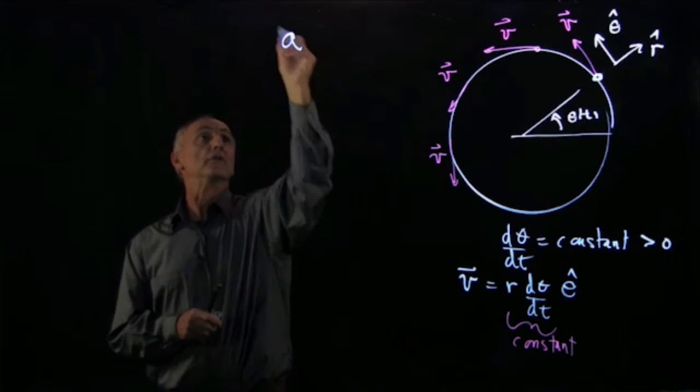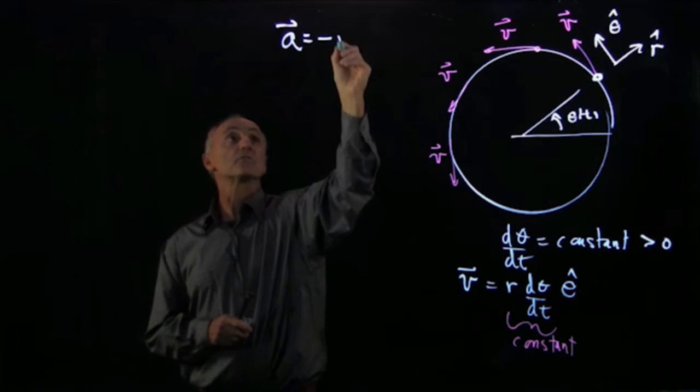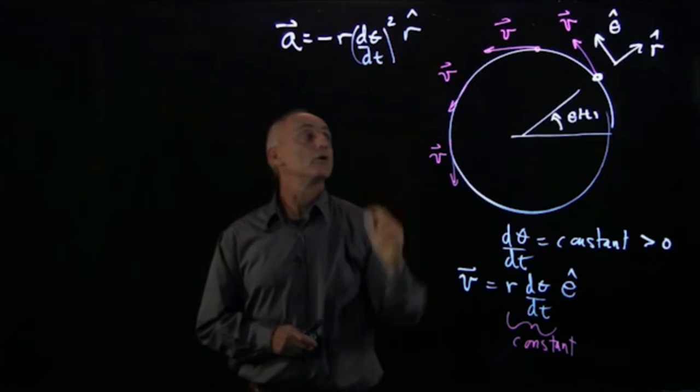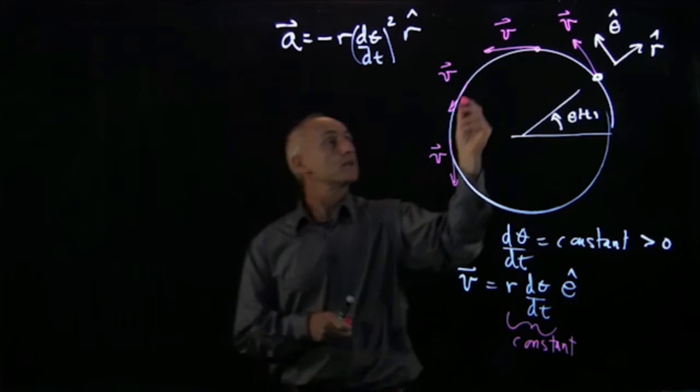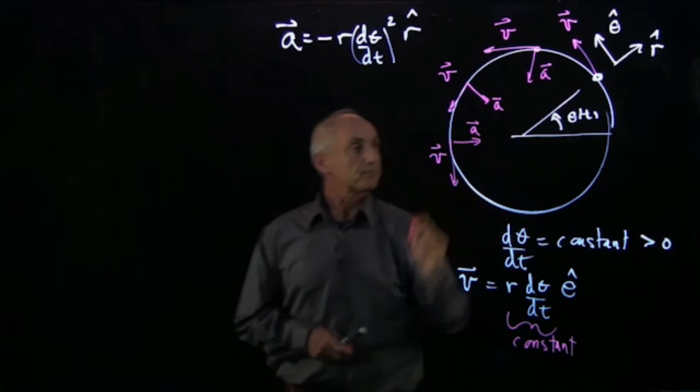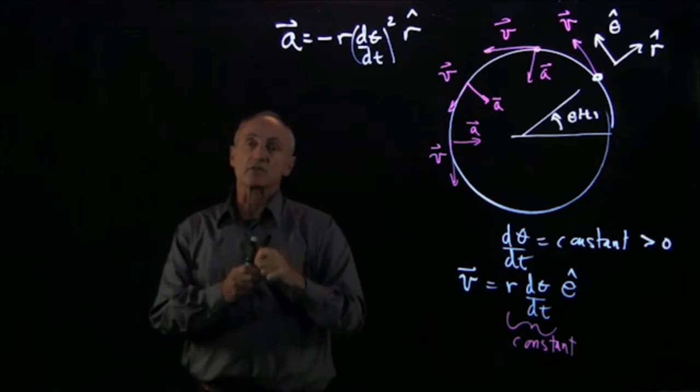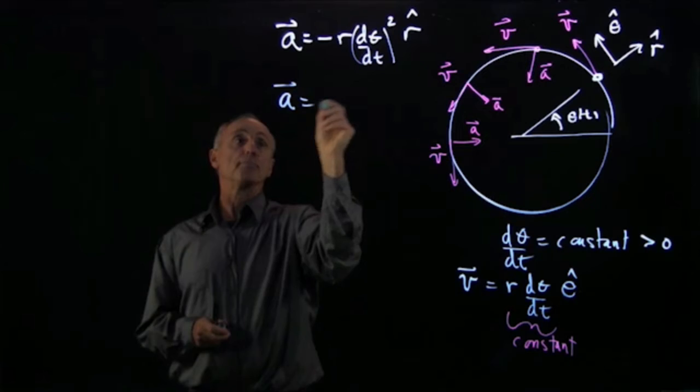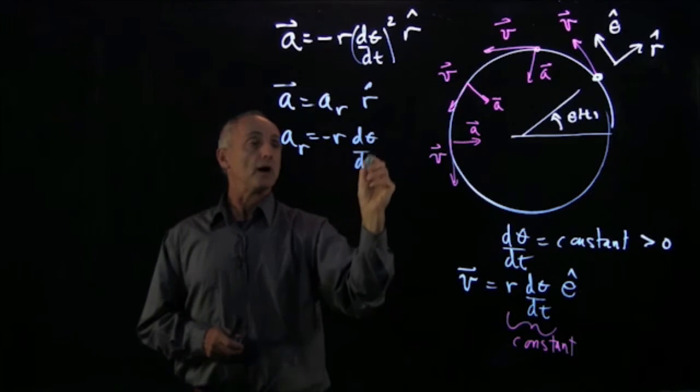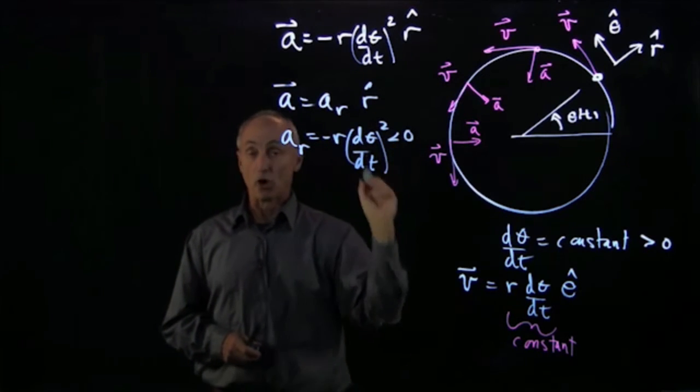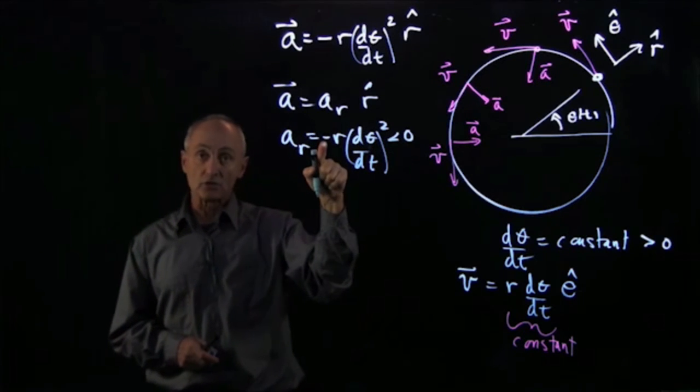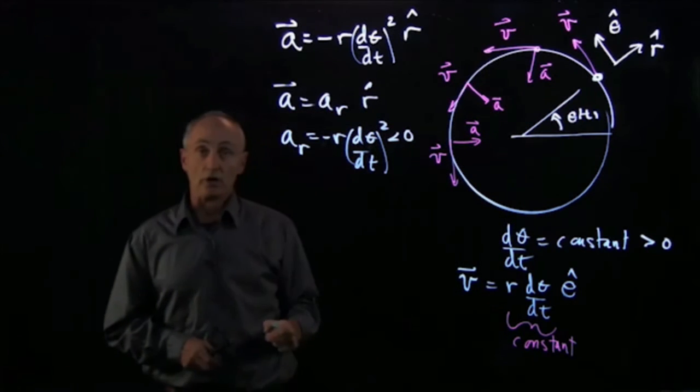So for this case of uniform circular motion, we calculated that the acceleration was equal to minus r (dθ/dt)² r hat, which means that at every point, the acceleration vector is pointing towards the center. Now, we can write that acceleration vector as a component a_r r hat, where this component is given by minus r times (dθ/dt)². It's always negative because when you square this quantity, that's always a positive quantity. The minus sign, just to remember, means that the acceleration is pointing inward.